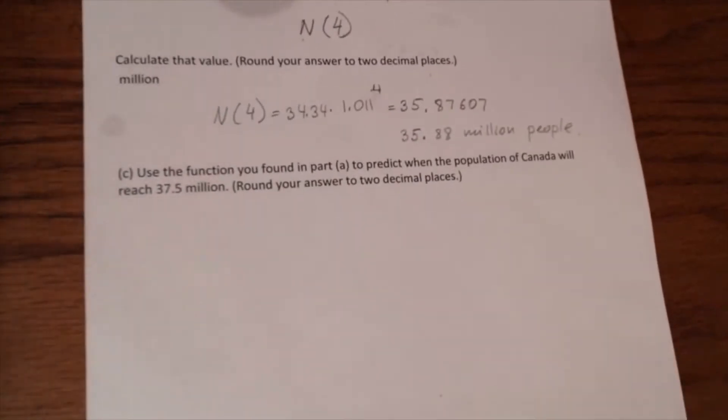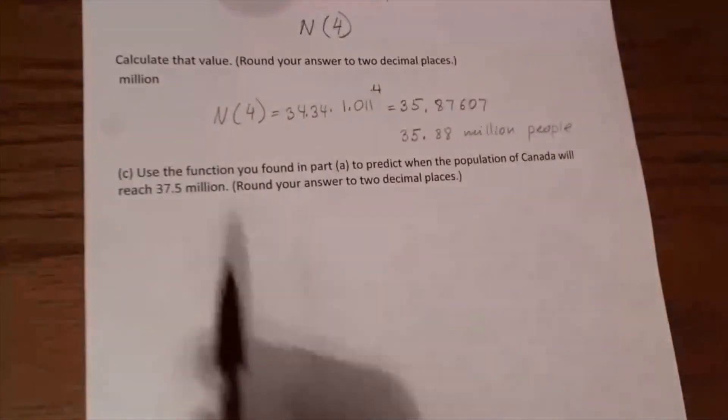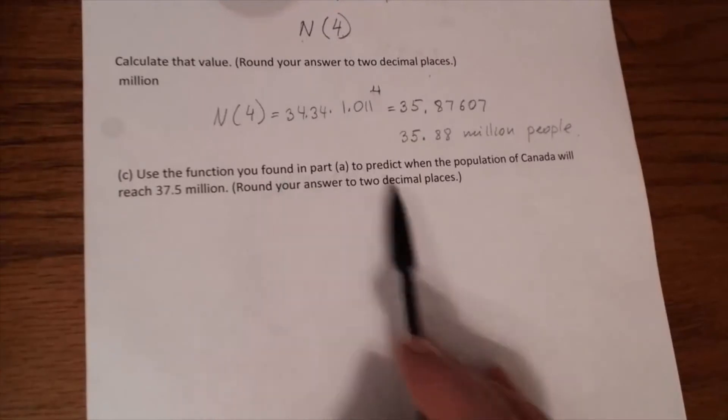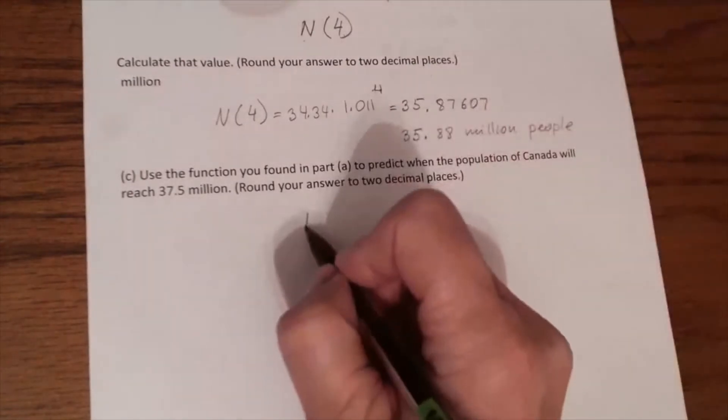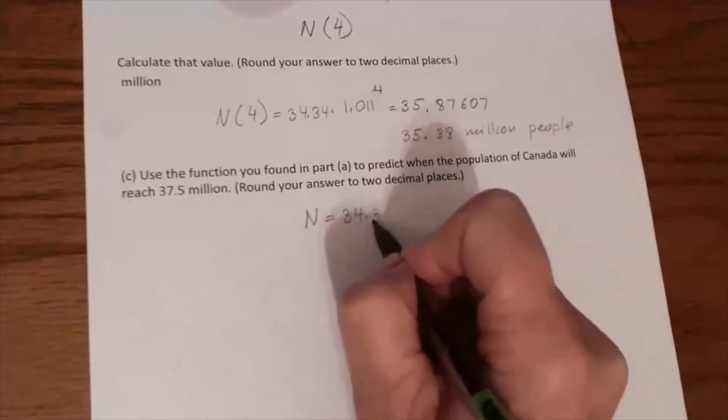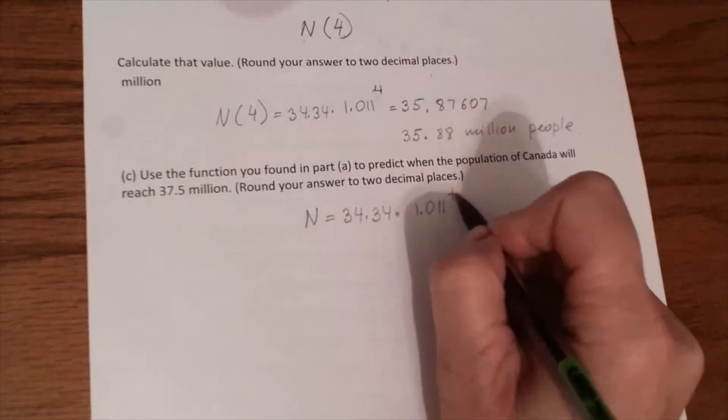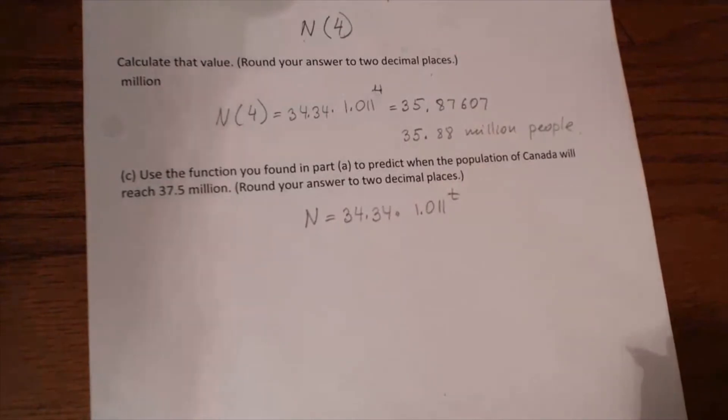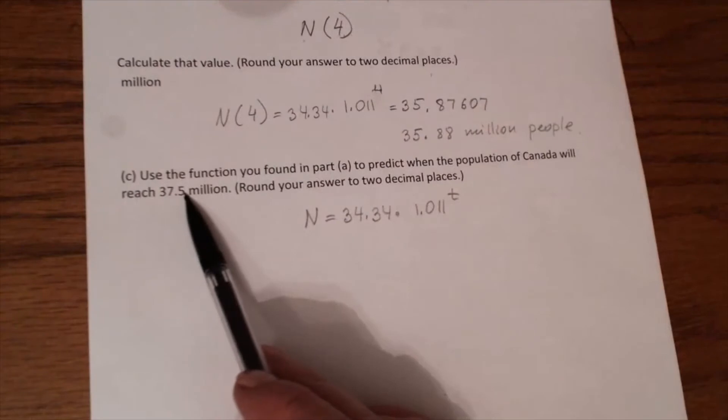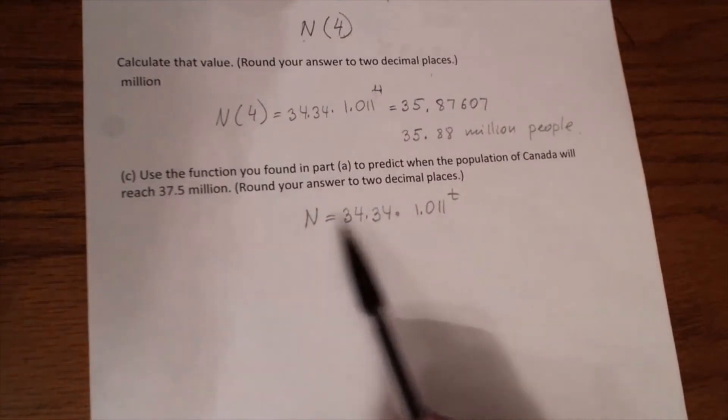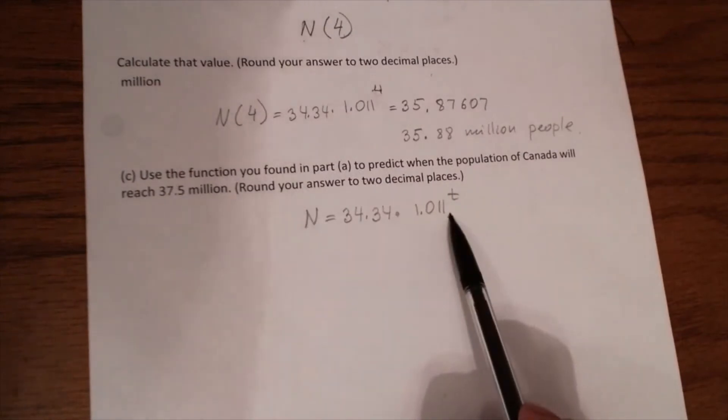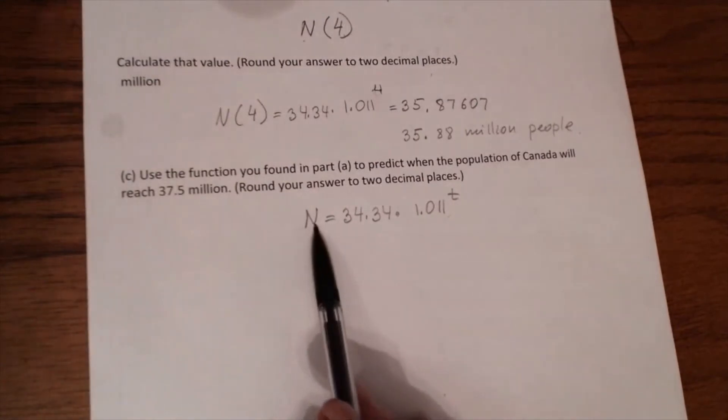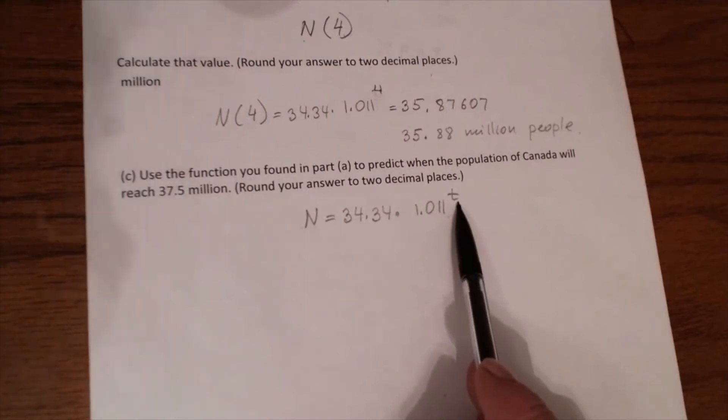Now we will review probably the hardest question in this section. Use the function you found in part A to predict when the population of Canada will reach 37.5 million. So the formula in part A was N equals 34.34 times 1.011 to the T power. We have 37.5 million and we need to substitute this number into this equation. Students have trouble to substitute this number in this equation. So here you have to think logically. N is your population. T is the time since 2011.